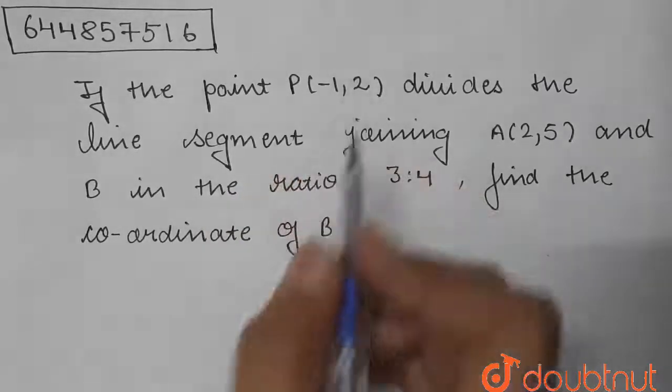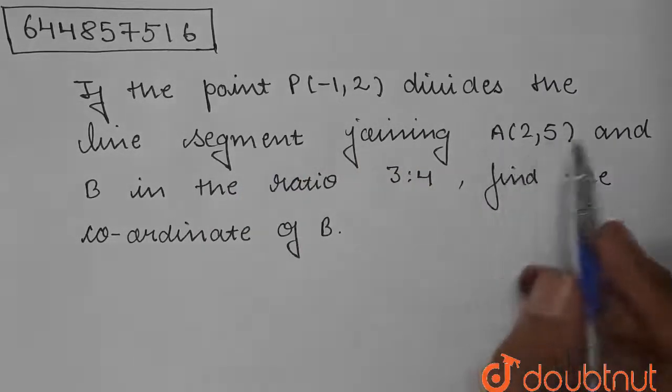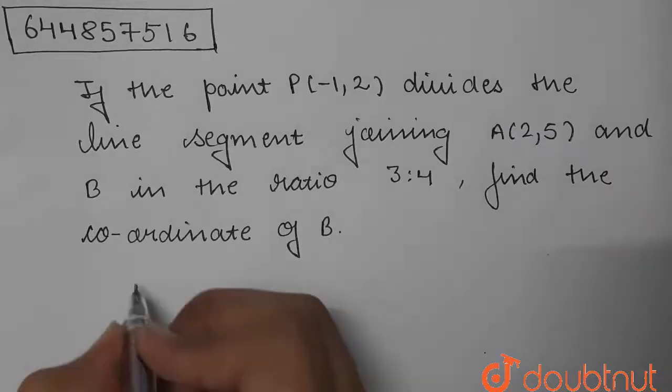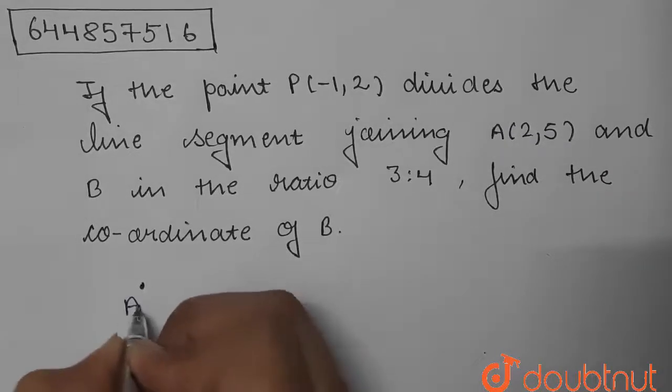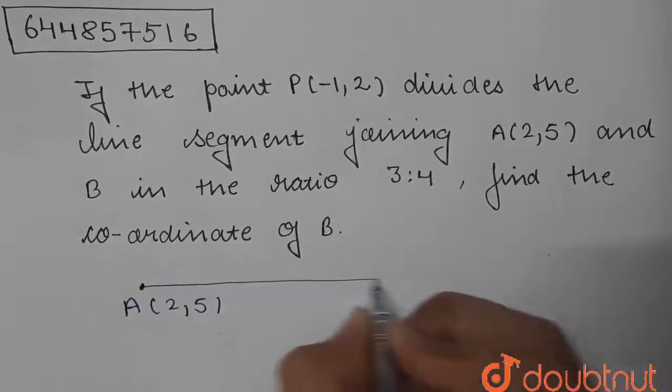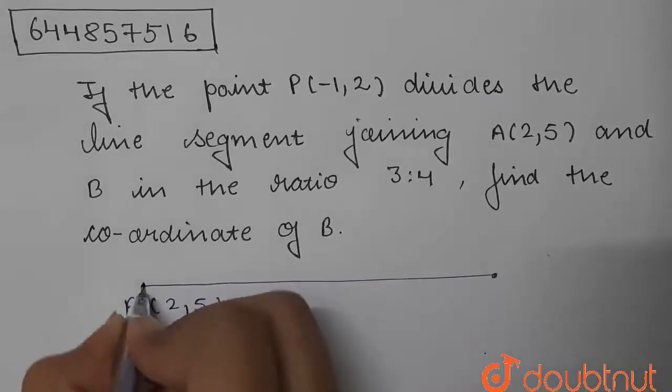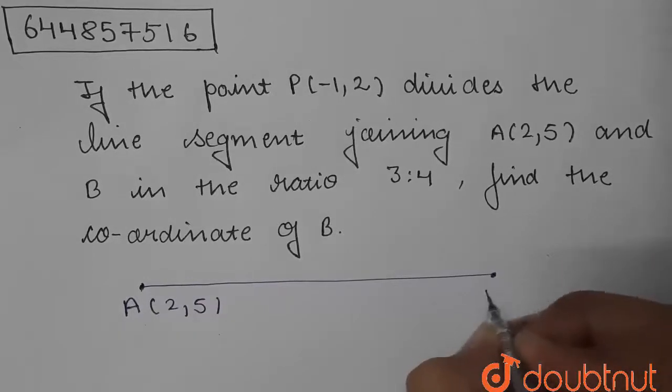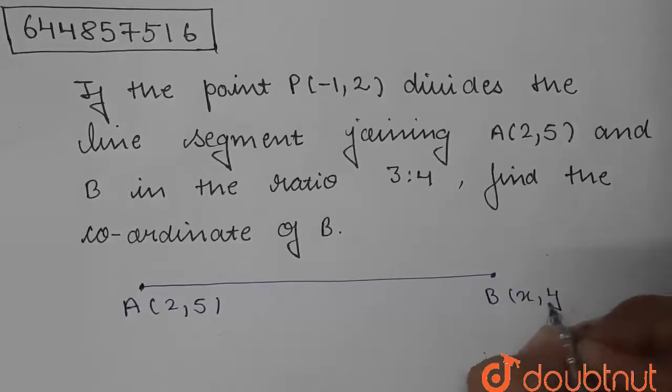In this question, we are given the point which divides the line segment joining point A and point B. If this is point A whose coordinates are (2, 5), and this is the line segment with one point A and another point B, let its coordinates be (x, y).